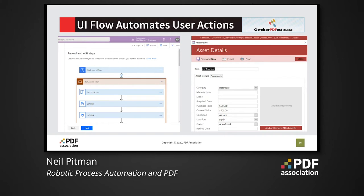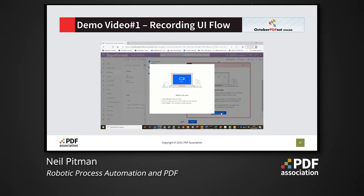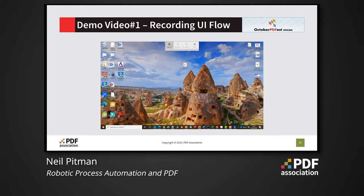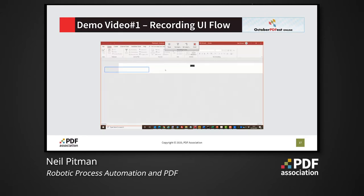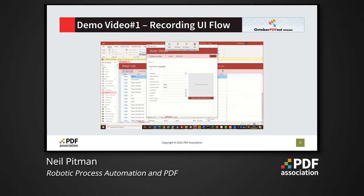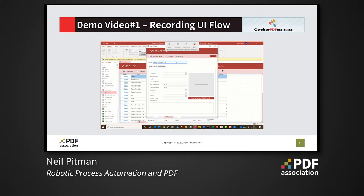Here we are automating Microsoft Access via a series of interface actions such as key depressions and mouse moves. We'll show how this is set up by recording a session using sample data that is then used to create the UI flow. Here we are using the UI flow recorder, which allows us to record a session with an application to create the template series of actions. As you can see, we're going through the process of creating a new asset using the recording tool and the sample data. When the flow is run later it will make use of the real data extracted from the PDF document.